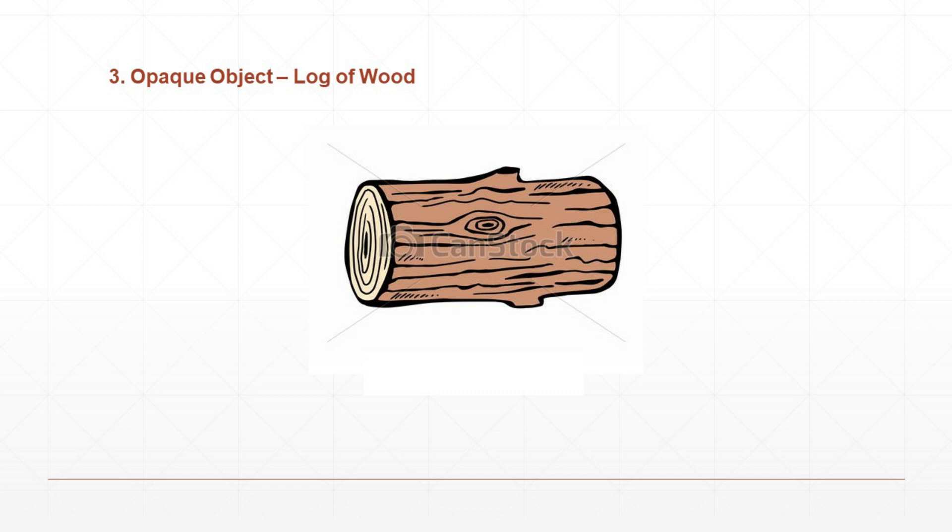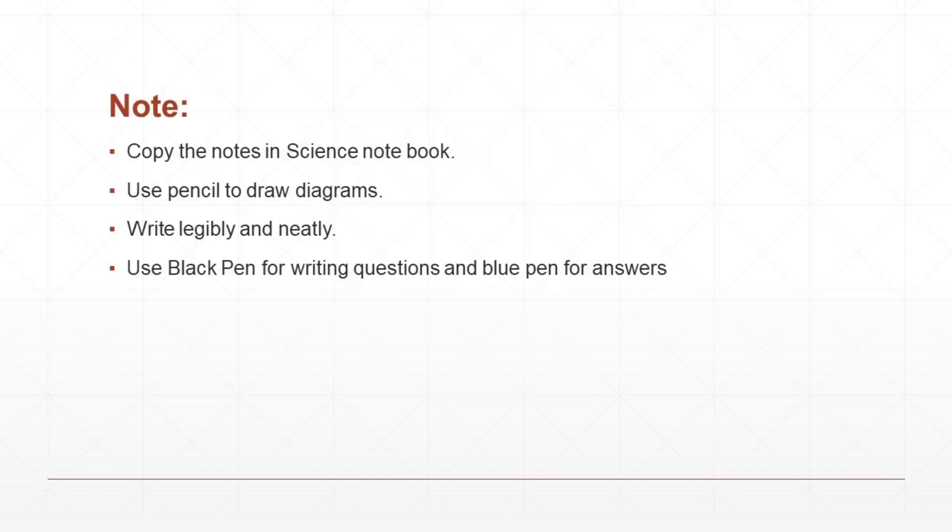Under this lesson, you are going to write five questions and answers and three diagrams. Copy everything in your classwork notebook with legible, neat handwriting. When you draw the diagrams, use a pencil. When writing the questions, use a black colour pen, and for the answers, use a blue pen. These are the standing instructions for writing science notes. Next Sunday, you are going to write the test, so prepare well, write the notes and get ready for the weekly test. Thank you, students.